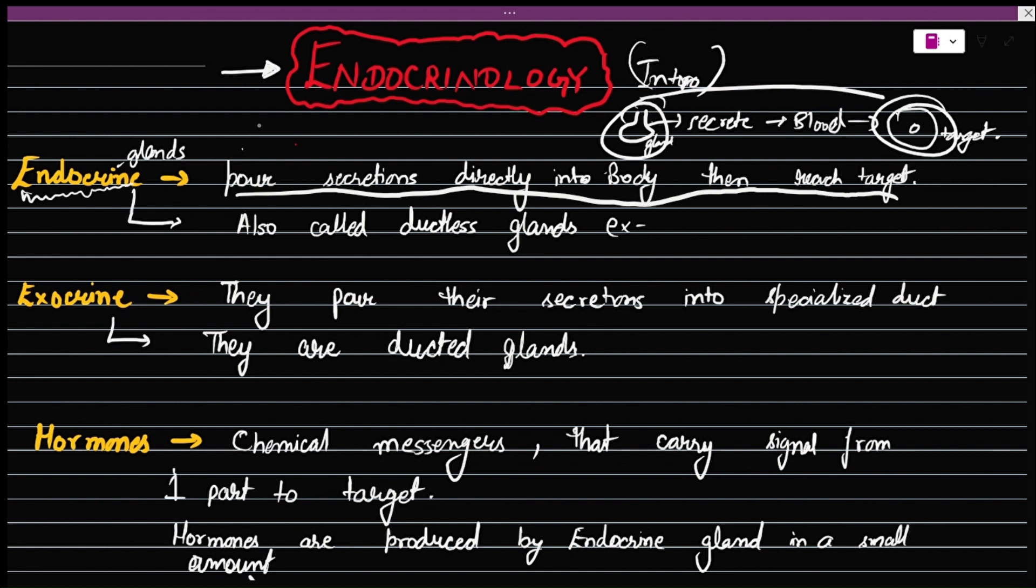These endocrine glands are also called ductless glands. Why are they called ductless glands? As you can see, the secretions are being poured into blood, not to some duct. That's why they are called ductless glands. Some examples of these are adrenal gland, pituitary gland, hypothalamus gland, etc. These are the examples of endocrine glands.